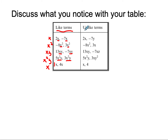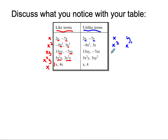If we come over to the side that says unlike terms — if you look at their variables, one has an x and one has a y, so they're not the same, that's why they're unlike terms. Both of these have x's, but one is x squared and the other one is x, so since they're not to the same power, they're unlike terms. If we look at the next one, this is xy and this is xz. They do both have an x, but then this has a y and that has a z, so they're not like terms.